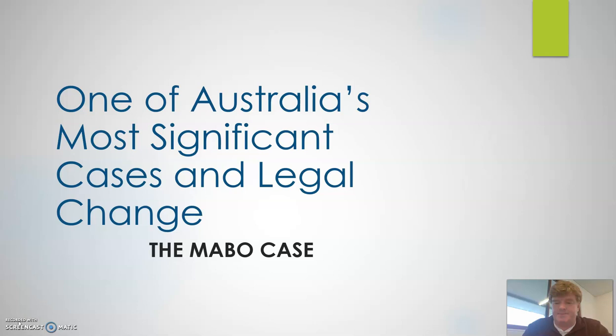G'day Year 11s. Today we're having a look at one of the important cases of the unit and the legal change that came from that case. It's looking at the Mabo case. Some of you are familiar with this as a case around terra nullius — the idea that Indigenous Australians were seen to have no claim to the land, that as British settlement happened Australia was seen as a vacant or empty land. The Mabo case challenged that and found that there was a relationship with the land that should be acknowledged, which led to the idea of native title in Australia.